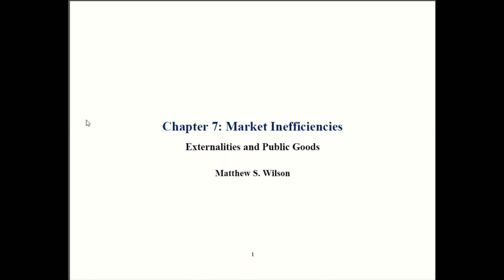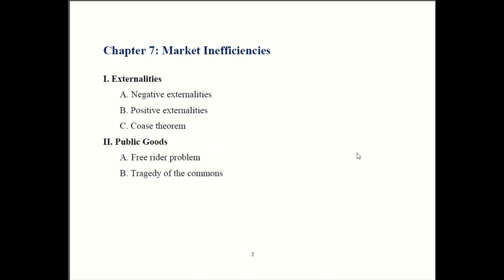The two ways that the market can be inefficient are when there are externalities and when there are public goods. We'll devote a section to each one. Externalities can be either positive or negative, and one way to deal with them is the Coase theorem. We'll learn about that and see some other solutions as well.